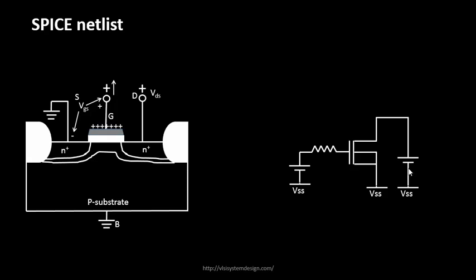We have connected a protection resistance to the gate before applying the supply. The reason is that the supply could throw current into the gate, and we don't want to feed current directly to the gate as it might damage it. The protection resistance limits the amount of current that enters the gate. So the setup has the MOSFET, the resistance, a gate voltage, a drain voltage, and the substrate and source connected to ground.